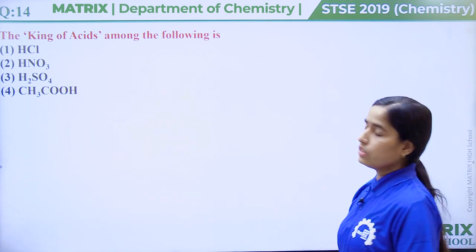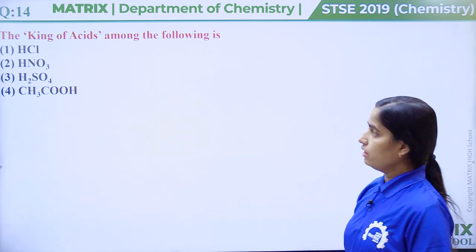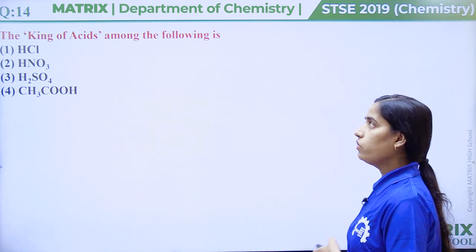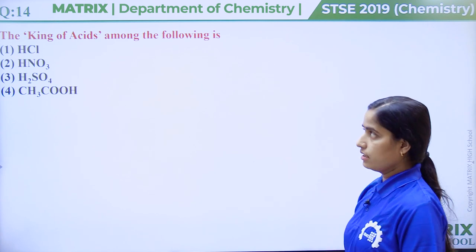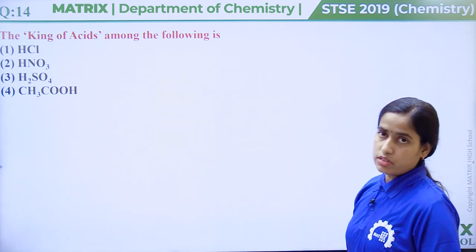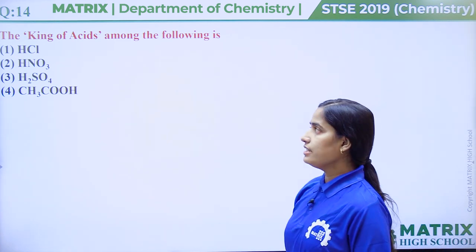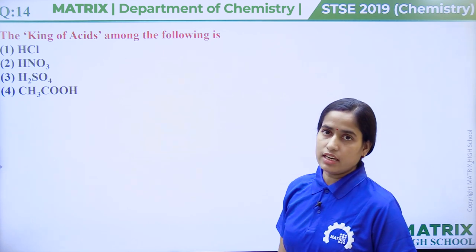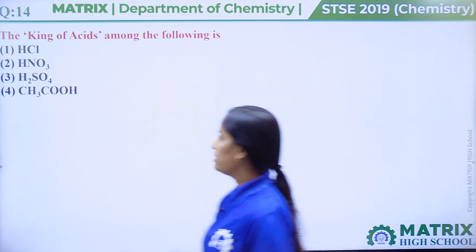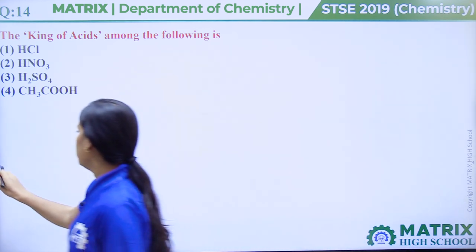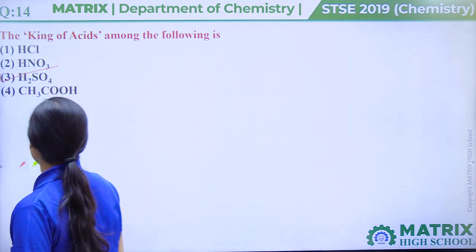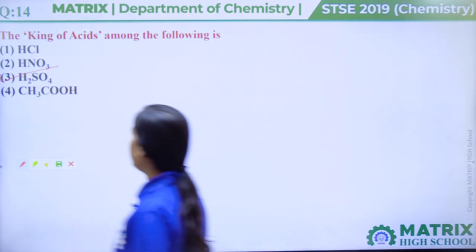Question number 14: The king of acids among the following is. The correct answer is option number 3.